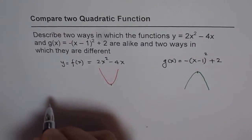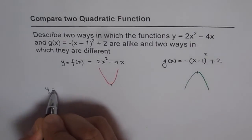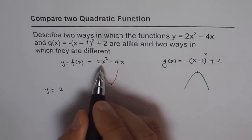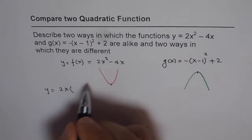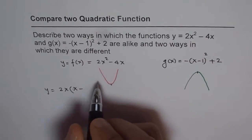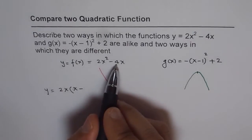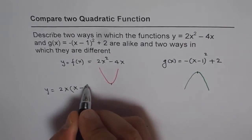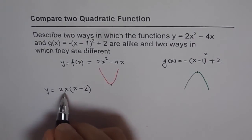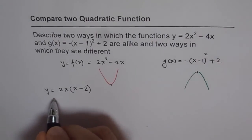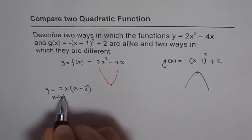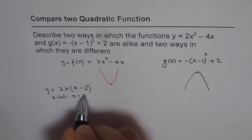So I can write this as y equals 2, I'll take 2x common. So when I take 2x common, I get x minus, when I factor out 2, I have to divide this by 2. So I get x minus 2. So I have x-intercepts at 0 and at 2.